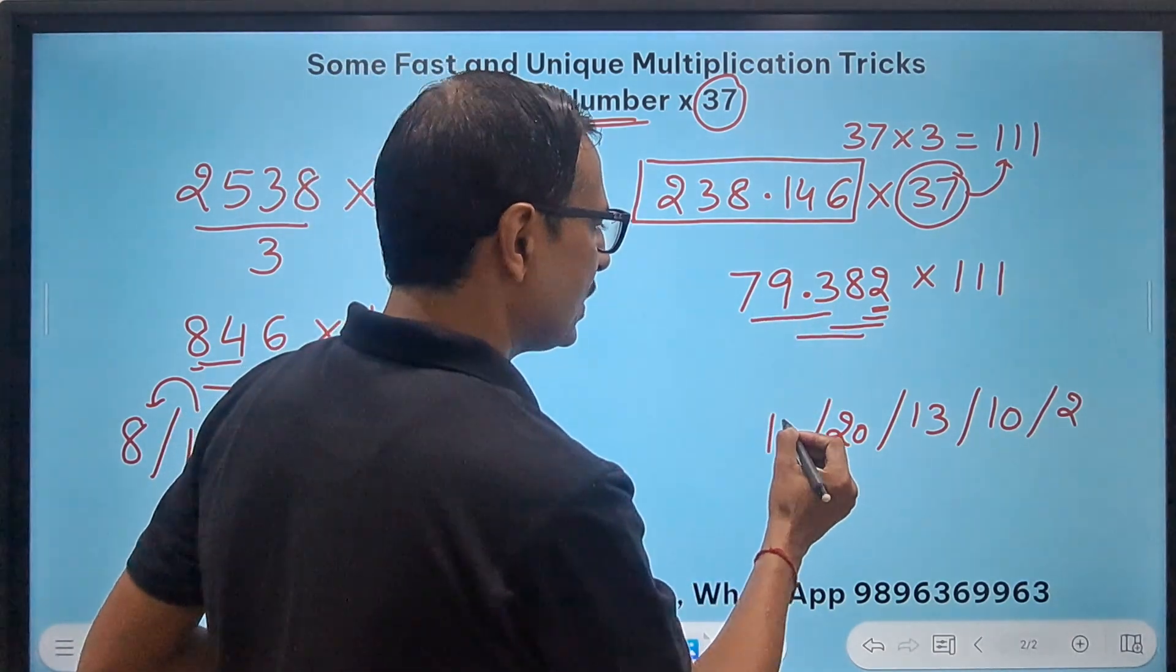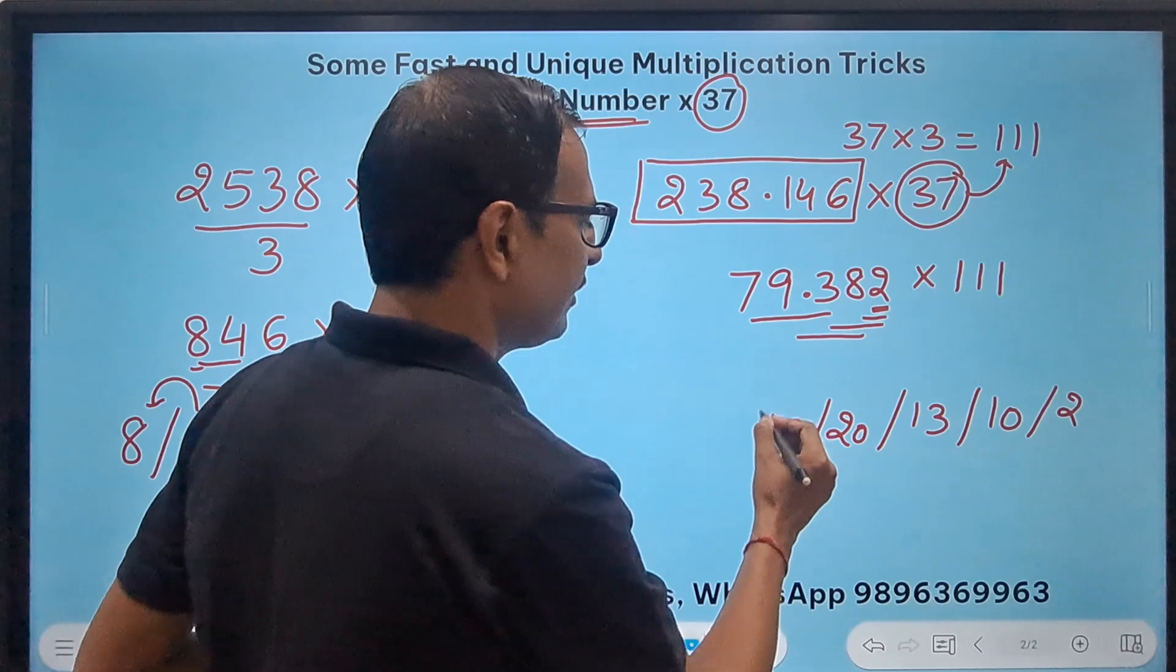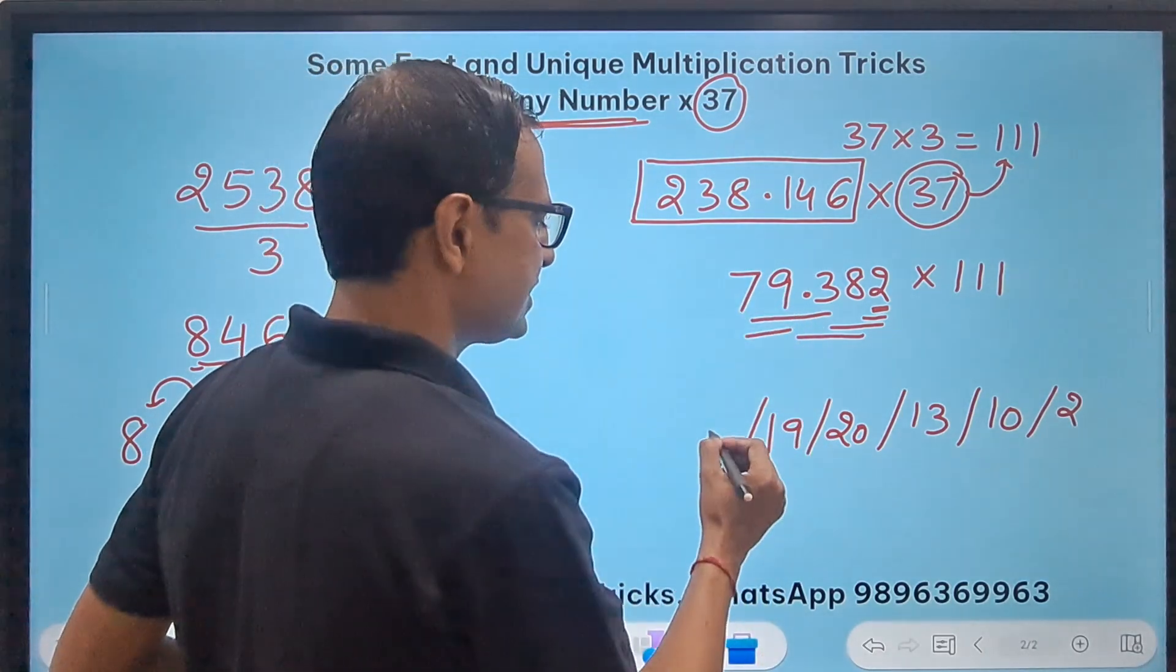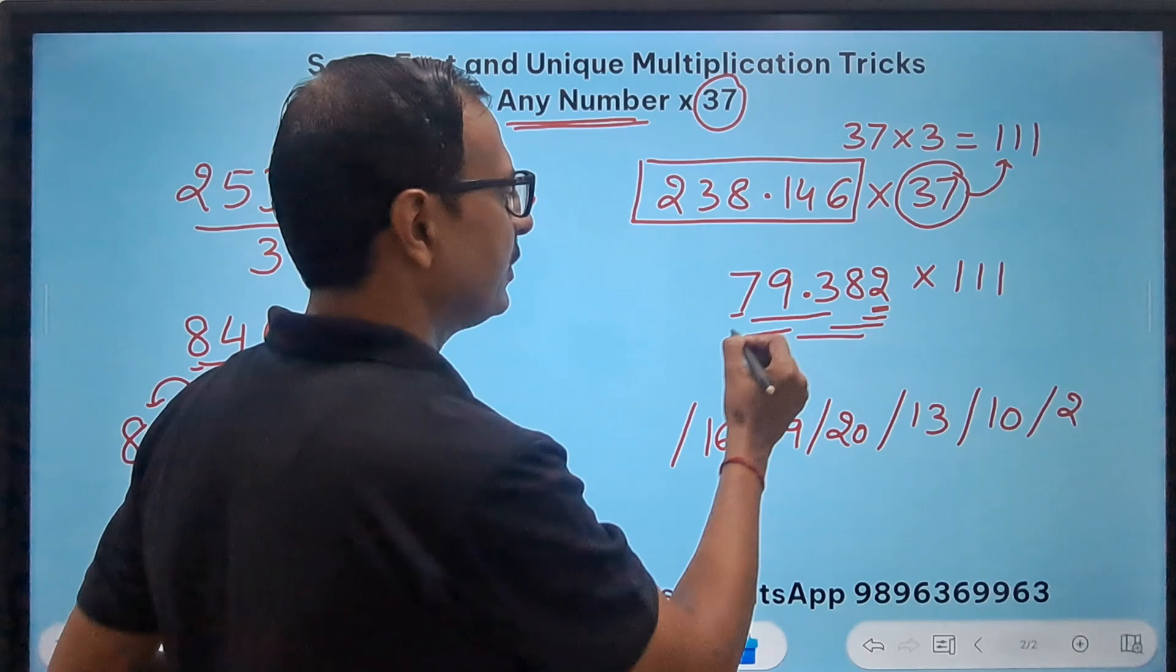And then start from 3 and make a triple this is 12 plus 9, 12 plus 7, 19 and then we have the doublet 9 plus 7, 16 and finally the single number 7.